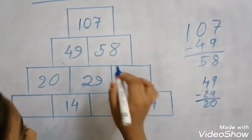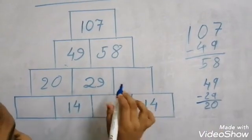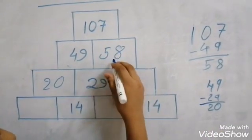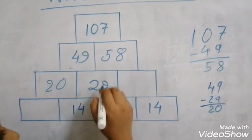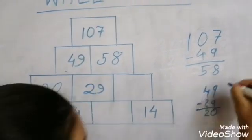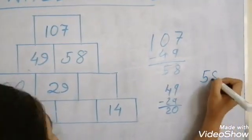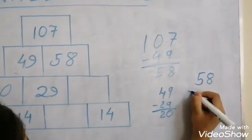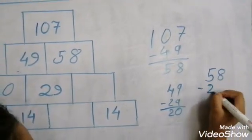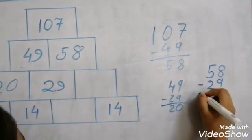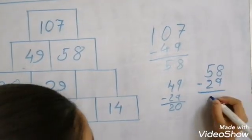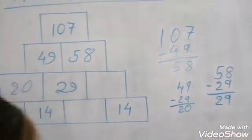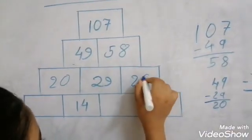Here I will say 29 plus dash is equal to 58. To get the number here we should subtract 29 from 58. So 58 minus 29 is equal to 29. So here we will write 29.